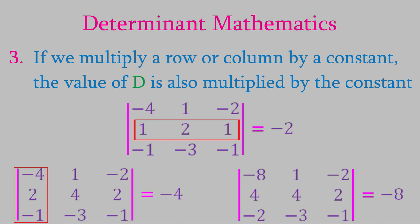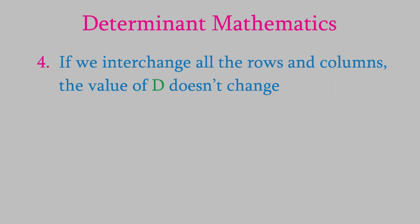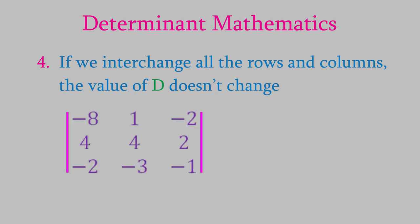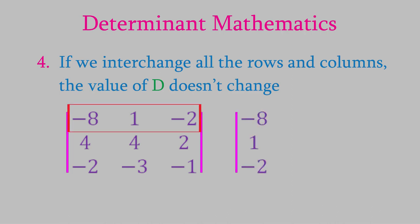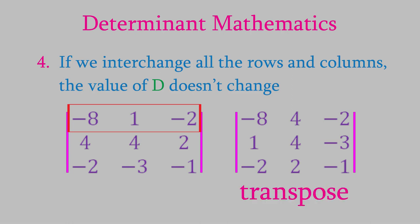The next rule says that if we exchange all the rows and columns, the value of the determinant stays the same. We take the first row of the first determinant and make it the first column of the second, and do the same with the second and third rows. This is known as taking the transpose of the determinant, and the resulting determinant has the same value as the original.